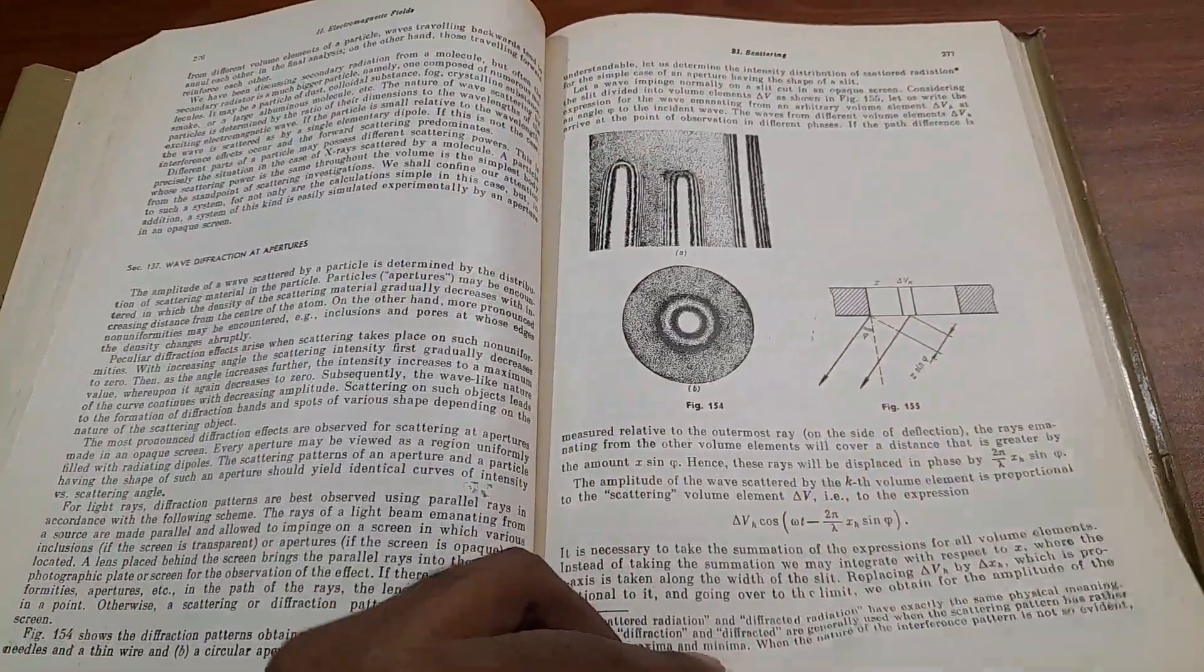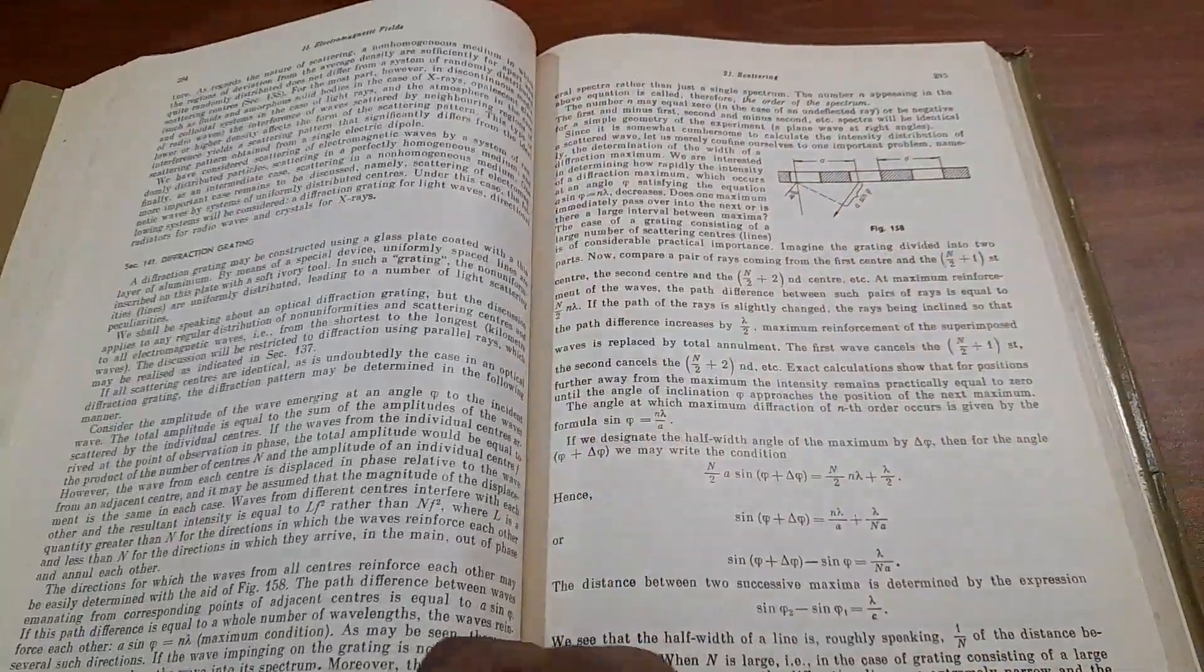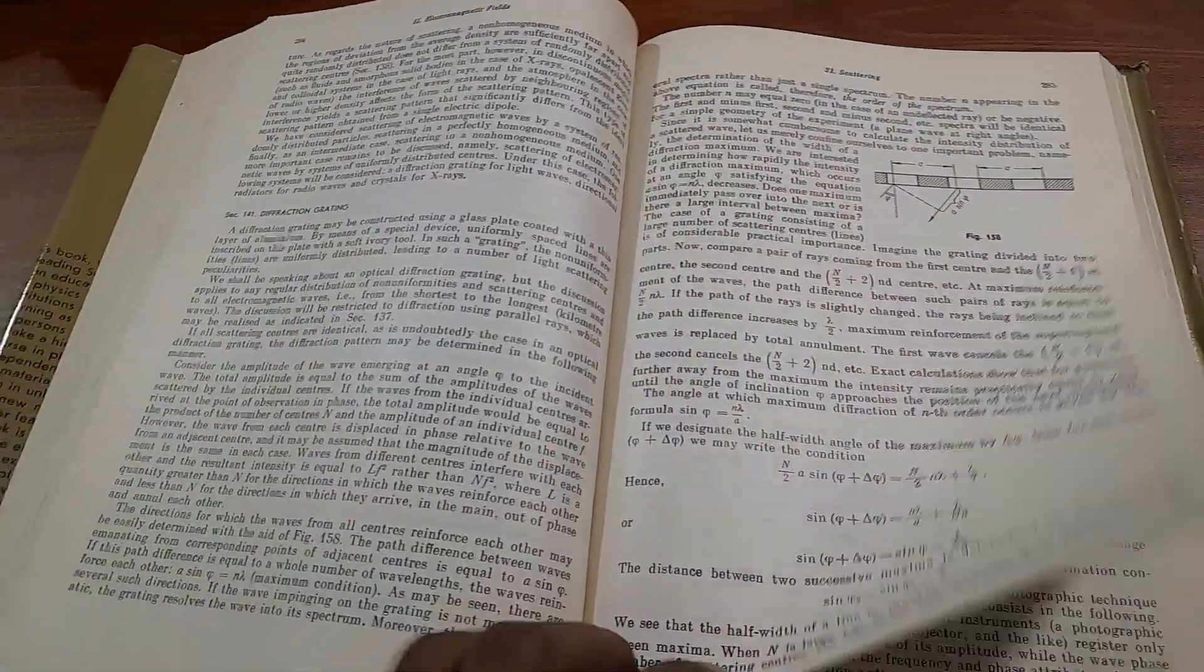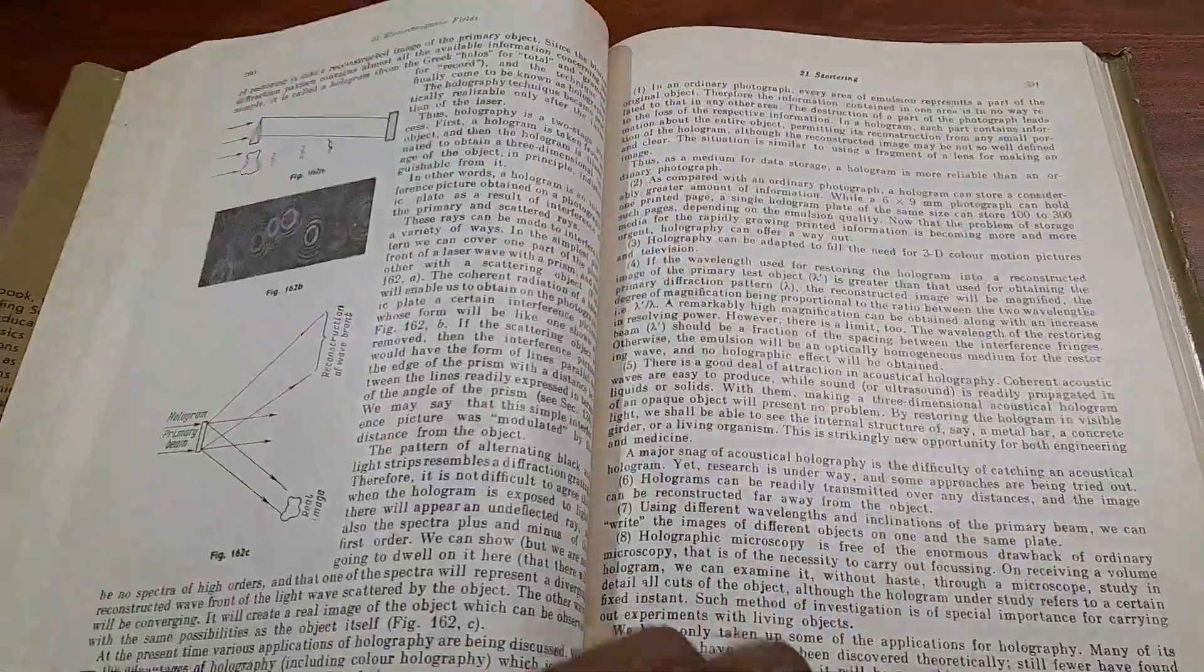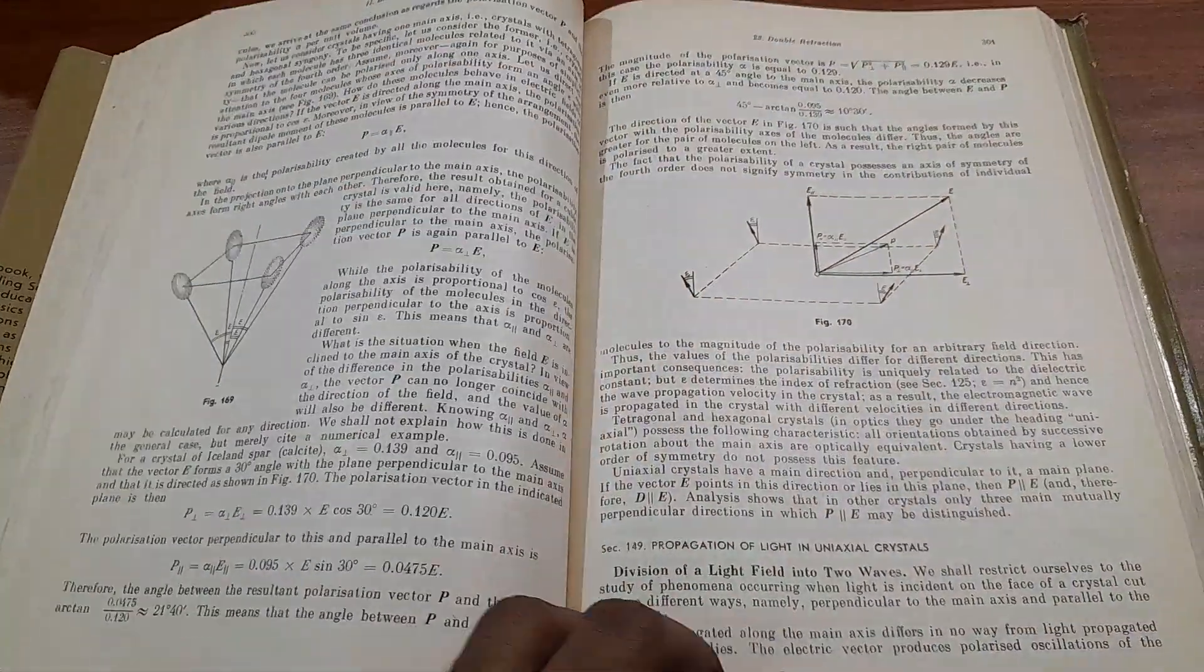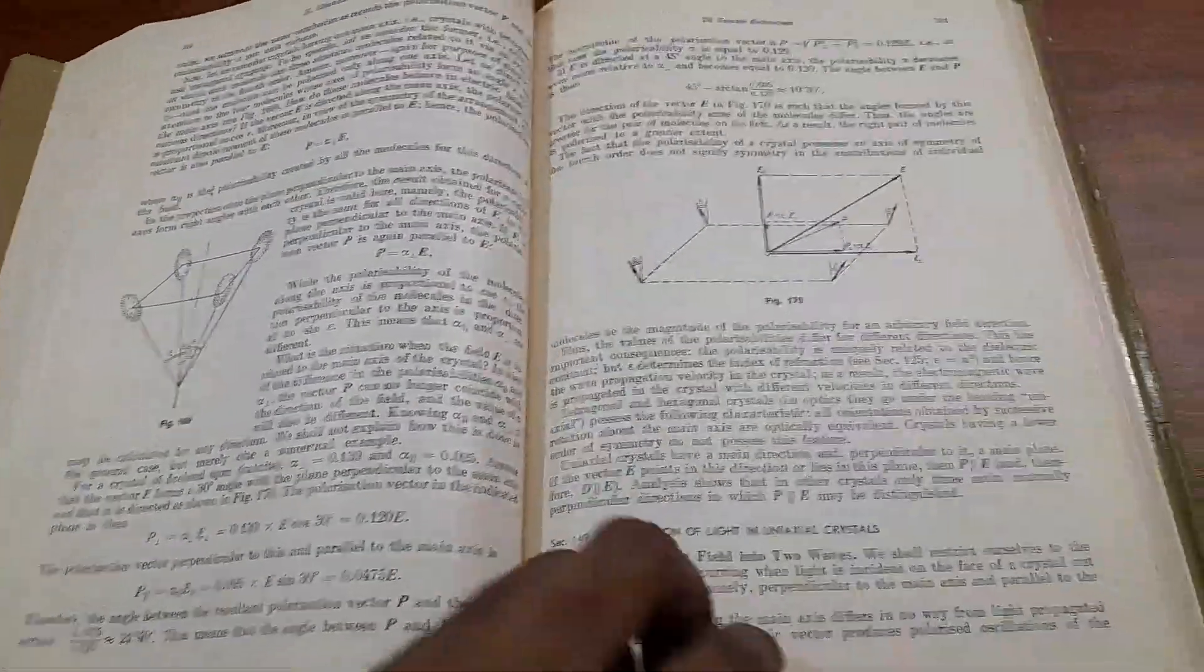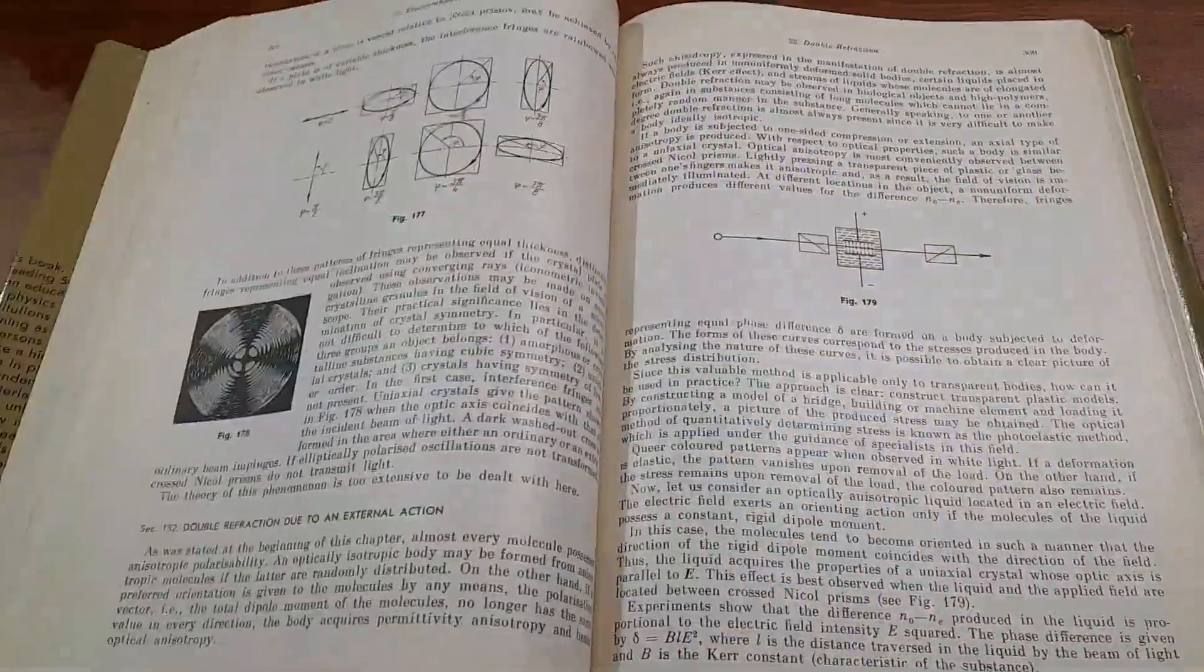Sometimes PDF would be available, but physical books are better than PDFs. Then we have scattering, secondary radiation, wave diffraction. The holograph is thoroughly detailed. That's the super interesting part of this book.